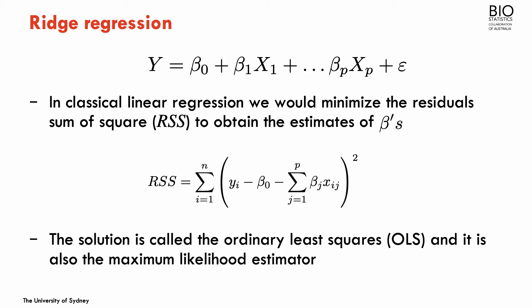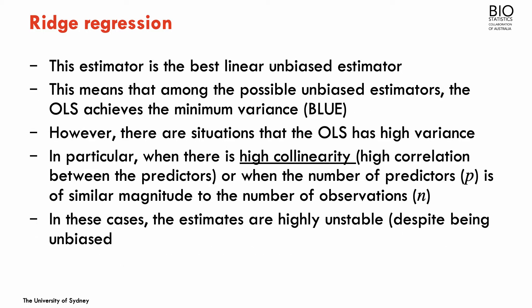In the case of linear regression, the ordinary least squares is also the maximum likelihood estimator — they coincide exactly. Because it is the maximum likelihood estimator, this estimator is the best linear unbiased estimator. Among all possible unbiased estimators for beta, the OLS achieves the minimum variance — it is called the BLUE estimator.